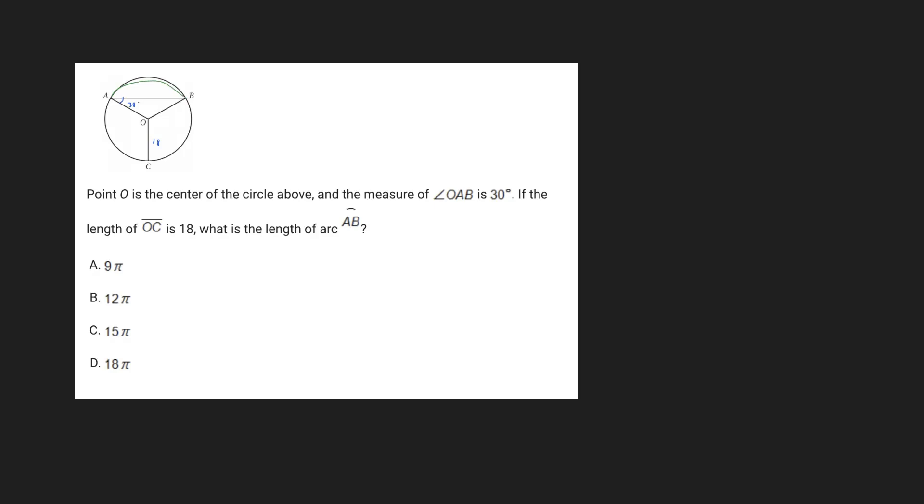Well, the first thing to note here is that OC represents the radius. So because OC is the radius, because it goes from one point on the circle to the center, we know that the radius has a value of 18.